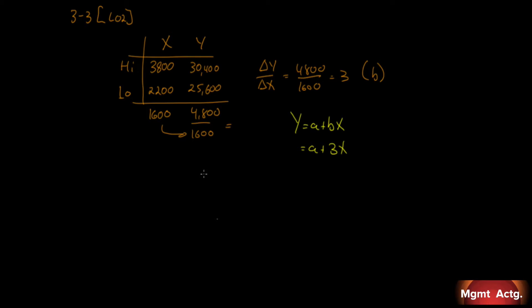Now we need to find the fixed cost. We're solving Y equals a plus BX. We have Y equals a plus 3X. Using one data point: $25,600 equals a plus 3 times 2,200. So a equals $25,600 minus $6,600, which is $19,000. Our formula is Y equals $19,000 plus 3X.